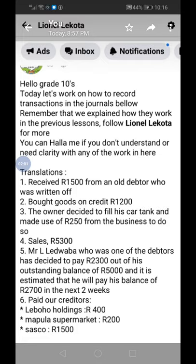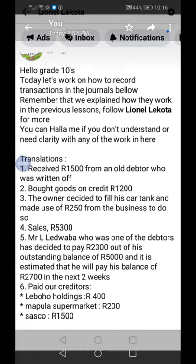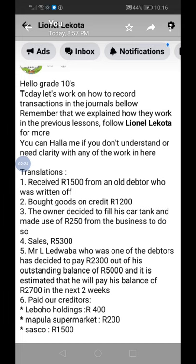First, let's look at the transactions. Number one: received 1500 from an old debtor who was written off — a debtor who once couldn't or wouldn't pay, but we received 1500 from him. Number two: bought goods on credit for 1200.